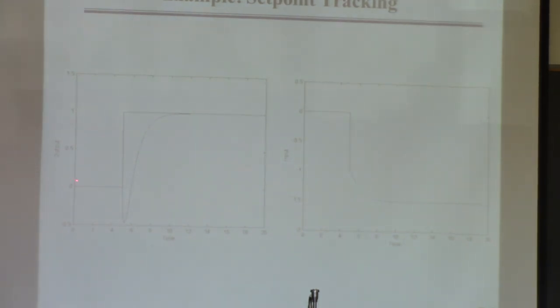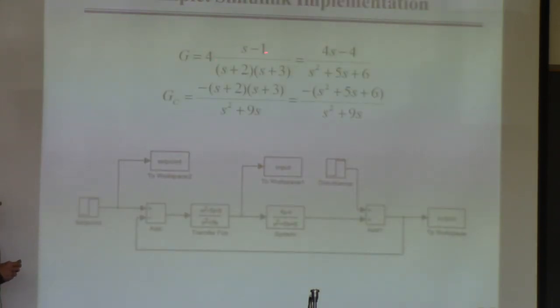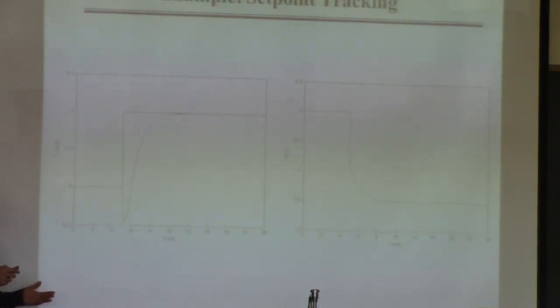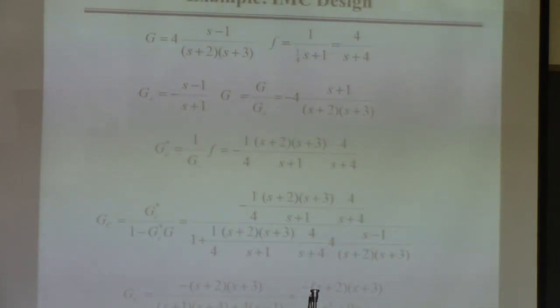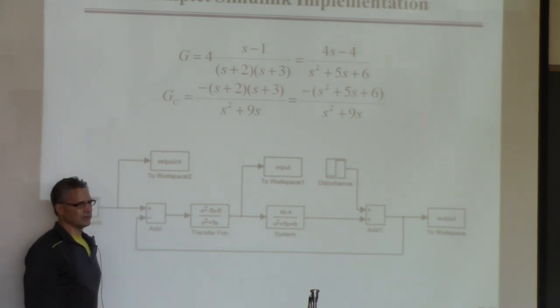Here's a picture for a set point change. Cruising along, do a set point change at time equal five — you see it initially goes in the wrong direction. Why? Because the process has a right half plane zero and you can't get rid of it. So if the process without control has an inverse response, so does your closed-loop system. Then it goes back to the set point pretty quickly. The point of this example is twofold: to go through the factorization procedure, and to show that even if the controller is not PID, you can still implement it in Simulink as an arbitrary transfer function.